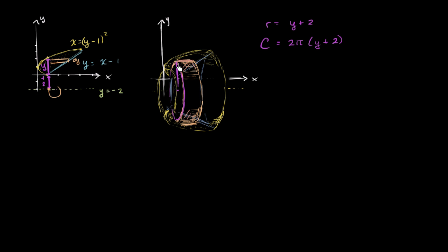Is just going to be that circumference times the, I guess you could say, the width of this shell times this distance right over here. Or we could say times this distance right over here. And what is that distance? Remember, we want everything expressed as a function of y. Well, it's going to be the upper function as a function of y minus the lower function.